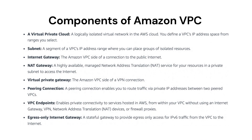Next question is: what are the components of Amazon VPC? VPC has the below components: Subnet, Internet Gateway, Virtual Private Gateway, NAT Gateway, Peering Connection, VPC Endpoints, and Egress-Only Internet Gateway. This service provides the scalability, connectivity and security to the resources provisioned in the VPC.